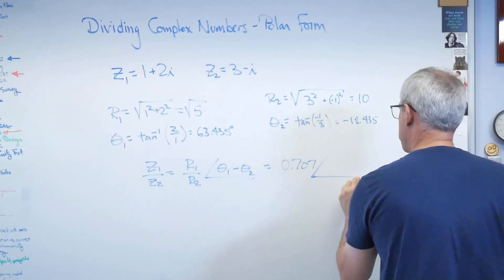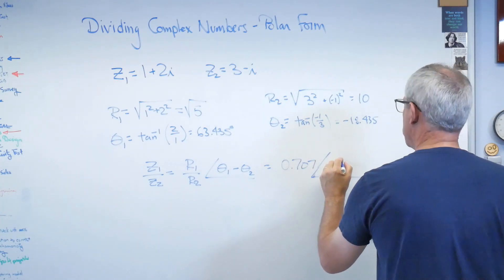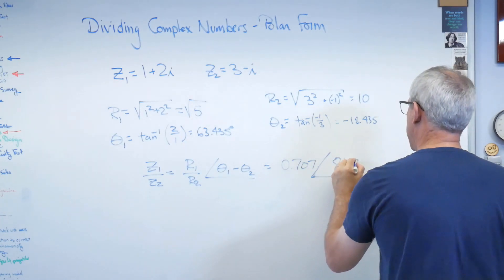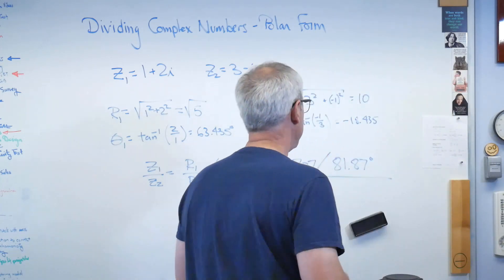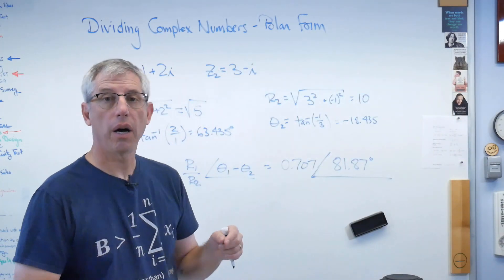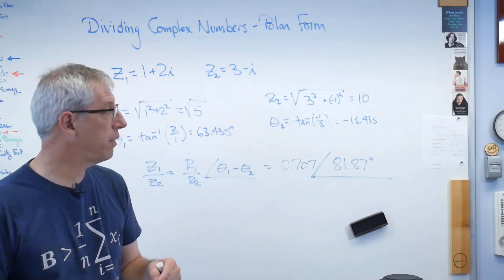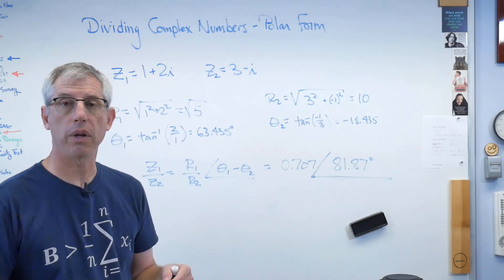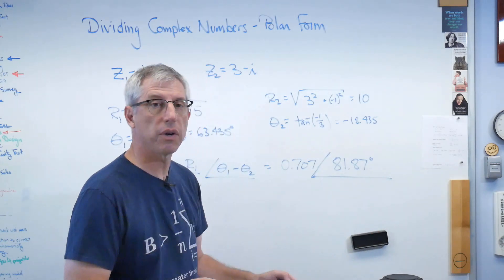0.707. Oh, my marker's dying here. Hang on. Sorry, guys. And that's going to be 81.87 degrees. Does that right? Well, if you do the calculation of 0.1 plus 0.7i, and you work that out in polar coordinates, you get the same answer.